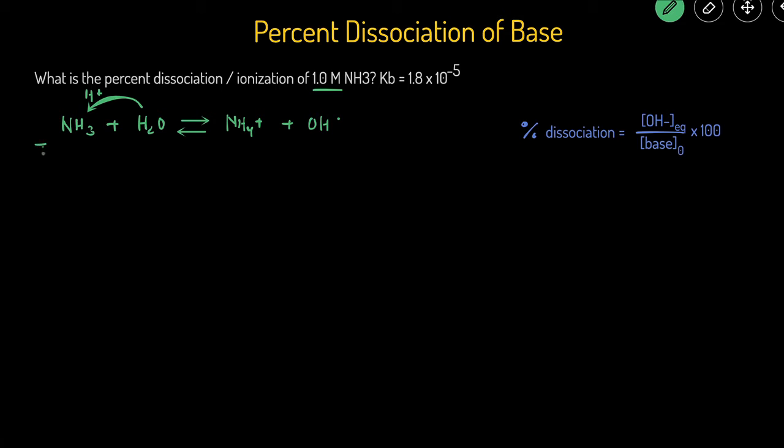Then we can set up an ICE table because this reaction goes to equilibrium and not completion. The original concentration of NH3 is 1.0. Water is a liquid, so let's ignore it. And there's no mention of the initial concentrations of any of the products. So that would be 0 and 0.